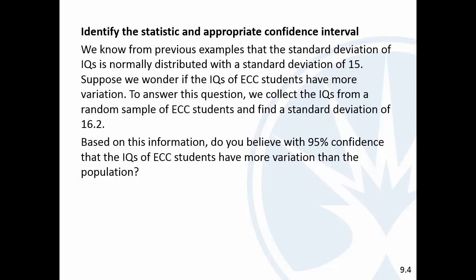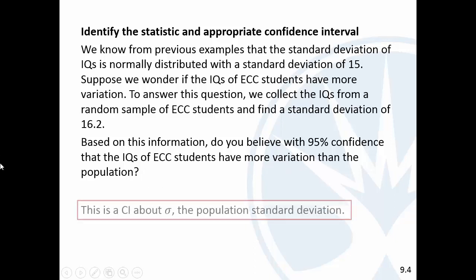We know from previous examples that IQ is supposed to have a standard deviation of 15, and we're wondering if that standard deviation holds true for ECC students. We collect a sample and find a standard deviation of 16.2. Do we believe with 95% confidence that the IQs of ECC students have more variation than the population? We're talking about variation — this is clearly a confidence interval about sigma, the population standard deviation.